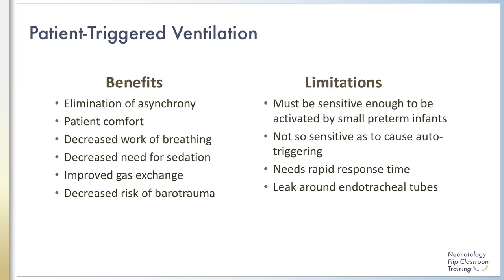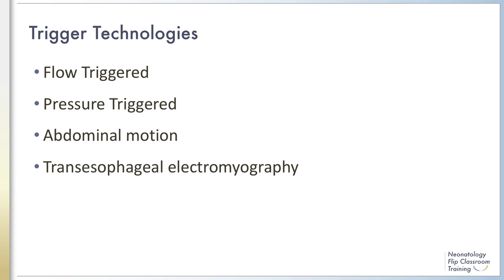There are limitations to patient-triggered ventilation. Sensors must be sensitive enough to be activated by small preterm infants but not so sensitive as to cause auto-triggering — the inappropriate triggering of the ventilator when the patient is not attempting to initiate a breath. There must also be a rapid response time to match the short inspiratory times and rapid respirations of premature infants. Leak around the endotracheal tube can also affect patient-triggered sensitivity.